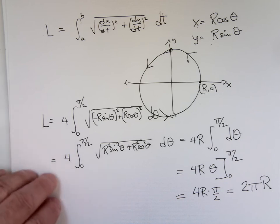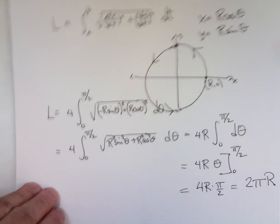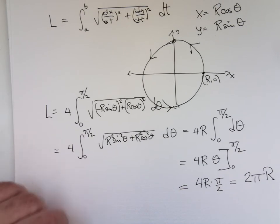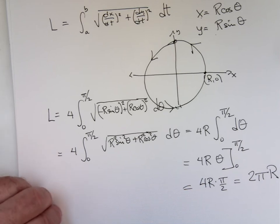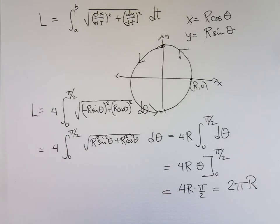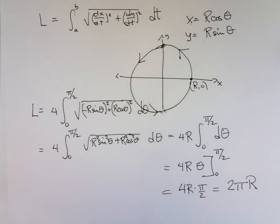If you have a problem like this, the coefficients in front of cosine and sine are the radius. Let me show you something else — surface area. If you go back to Calc 2, after arc length you do surface area. You take that piece of arc length, whip it around an x-axis or y-axis, and generate a solid of revolution. You can find its surface area.